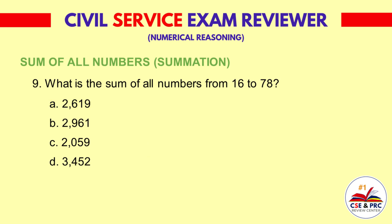Question 9: What is the sum of all numbers from 16 to 78? a. 2,619  b. 2,961  c. 2,059  d. 3,452